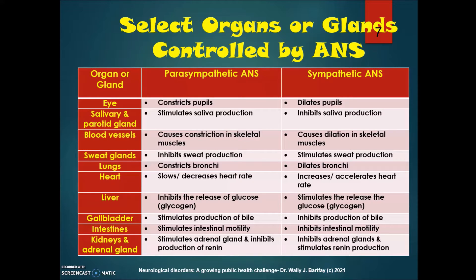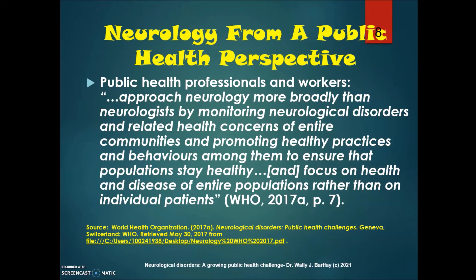For example, looking at the eye: the parasympathetic ANS will constrict pupils, whereas the sympathetic ANS will dilate the pupils. Looking at the heart as another example: the parasympathetic will slow or decrease heart rate, whereas the sympathetic will increase or accelerate heart rate.